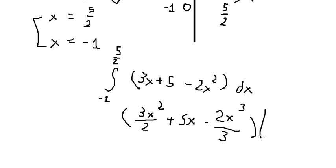And we put the boundary in here. We put 5 over 2 go in here and negative number 1 go in here. The final answer, that is about 343 over 24.